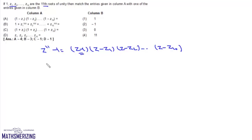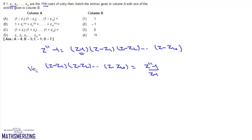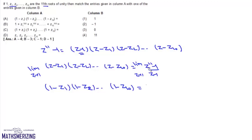We divide everything by (Z-1), giving (Z-Z1)(Z-Z2)...(Z-Z10) = (Z^11 - 1)/(Z-1). Taking the limit as Z tends to 1 on both sides, the left side gives (1-Z1)(1-Z2)...(1-Z10), and the right side uses the standard limit formula giving 11. So entry A matches with 4.